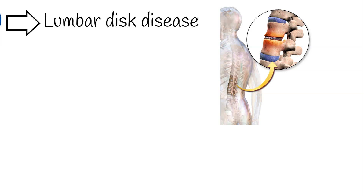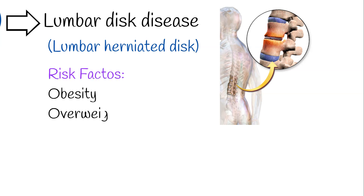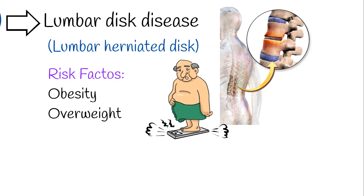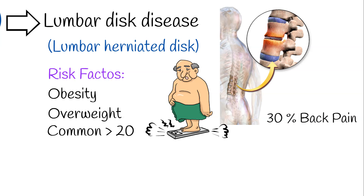Lumbar disc disease is also known as lumbar herniated disc. The exact cause of the disease is not known, but obesity and being overweight are important risk factors. Disc herniation is not common before the age of 20 and is rare in the elderly population. Lumbar disc disease is so common that it is thought to account for almost a third of low back pain cases.